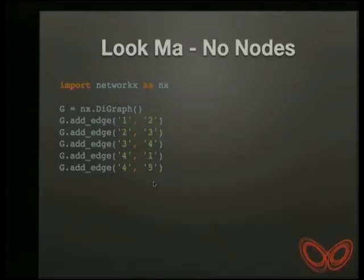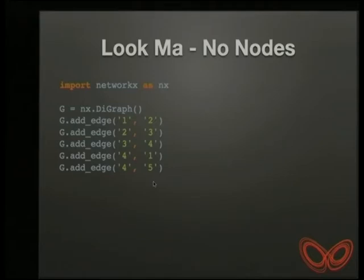Another thing you can do with NetworkX is that you don't have to declare nodes explicitly. Declaring nodes is really just a little bit over the top if you don't need to, because once the edges get put in, the nodes are automatically inserted. That's all you need to do and then you can plot away.